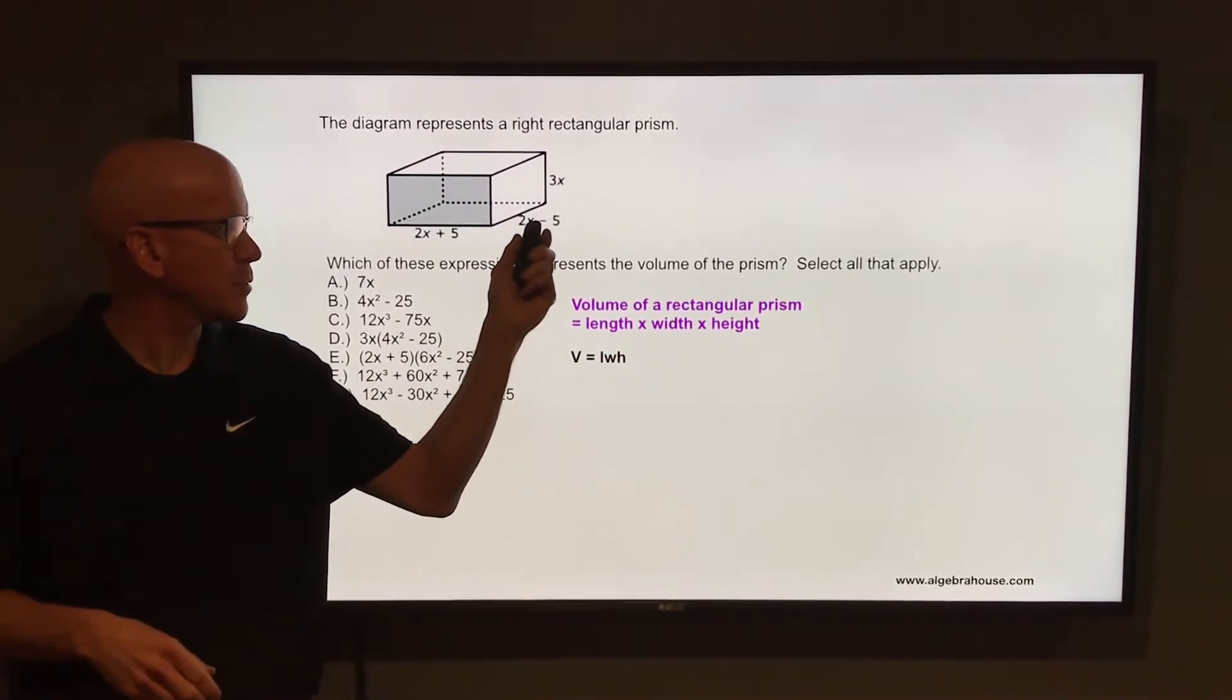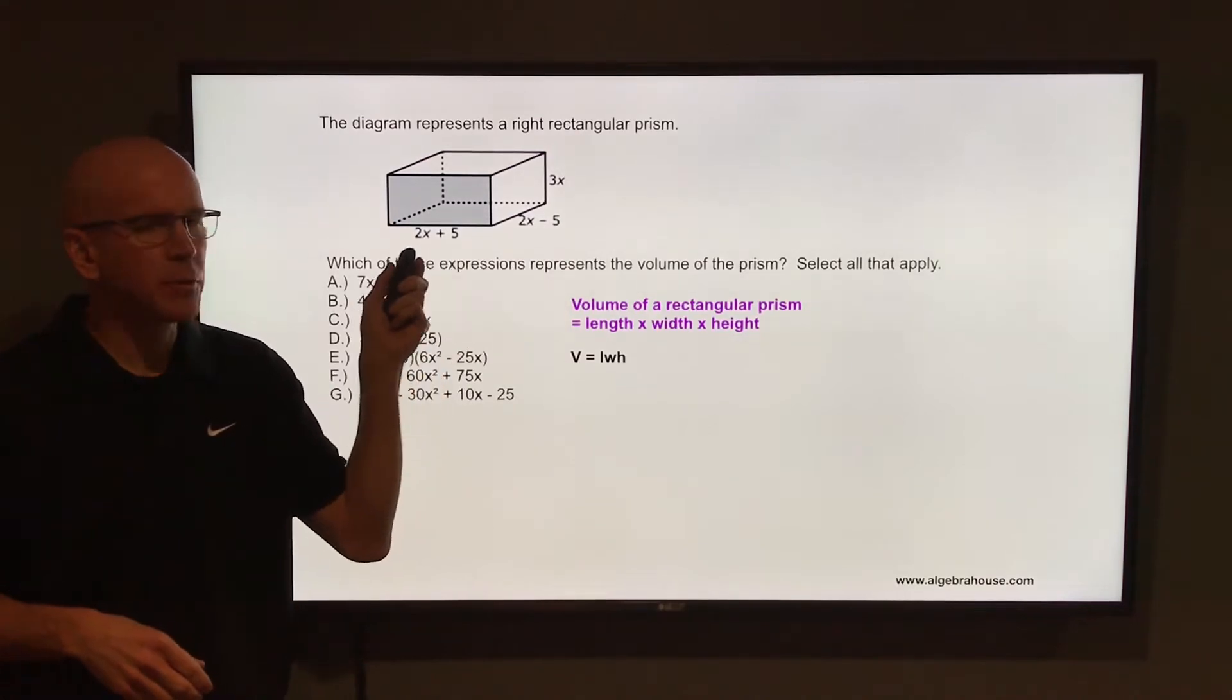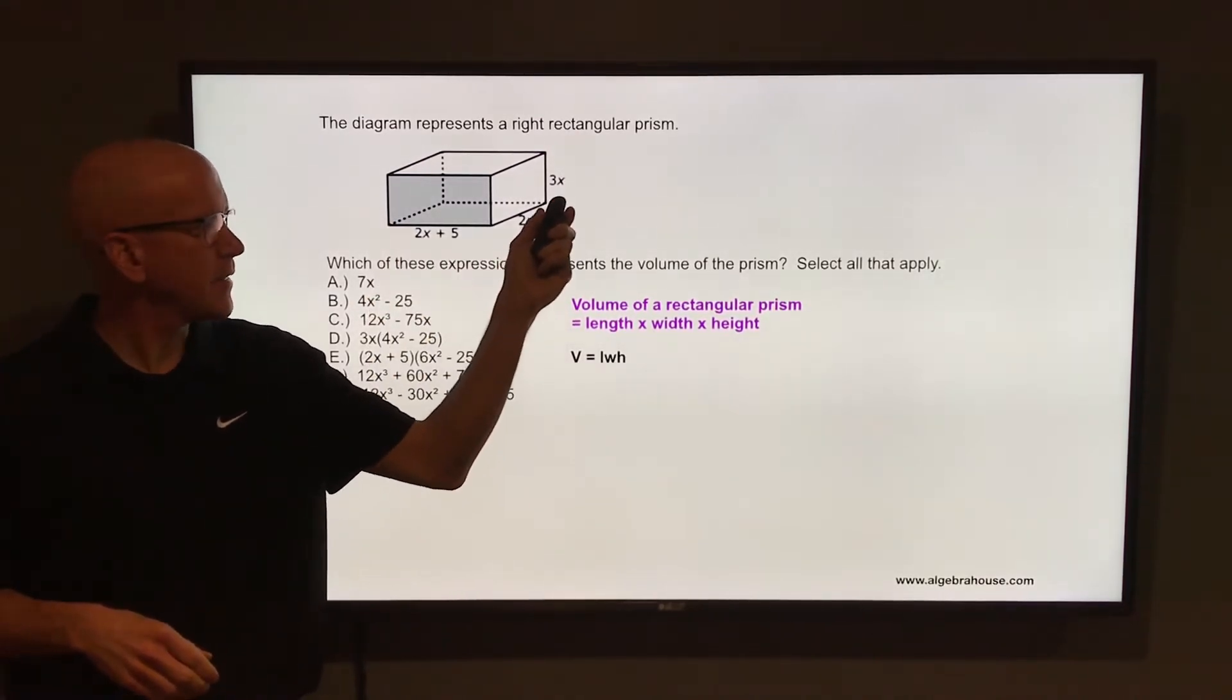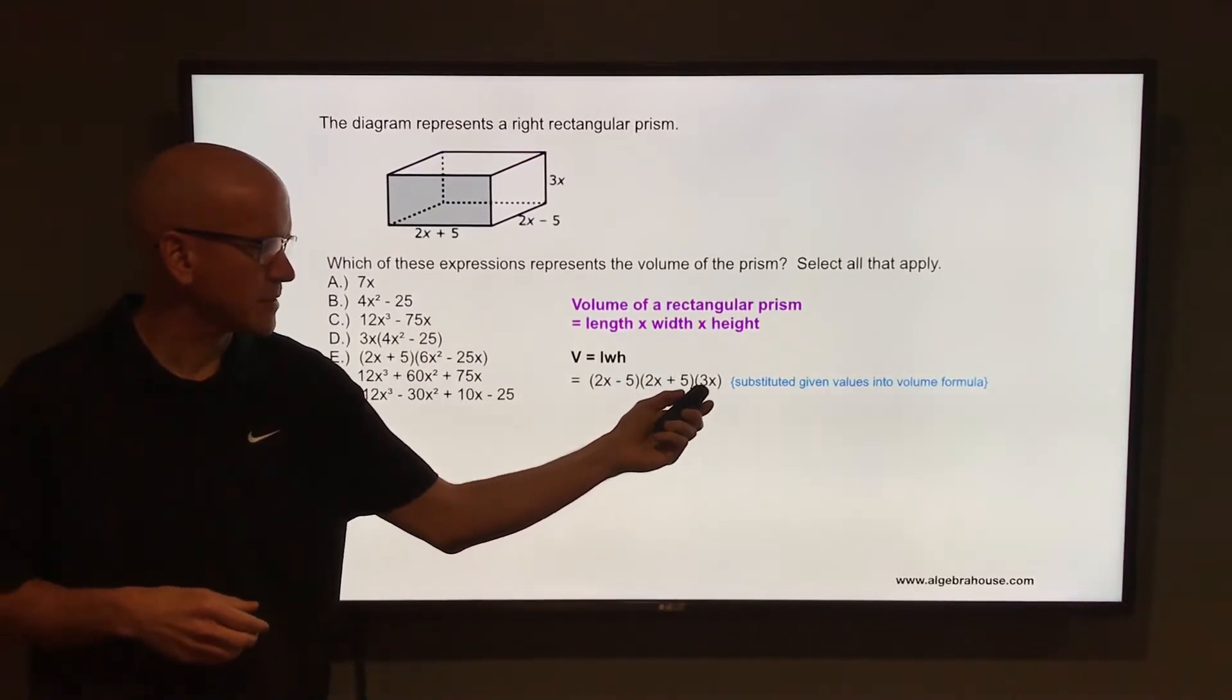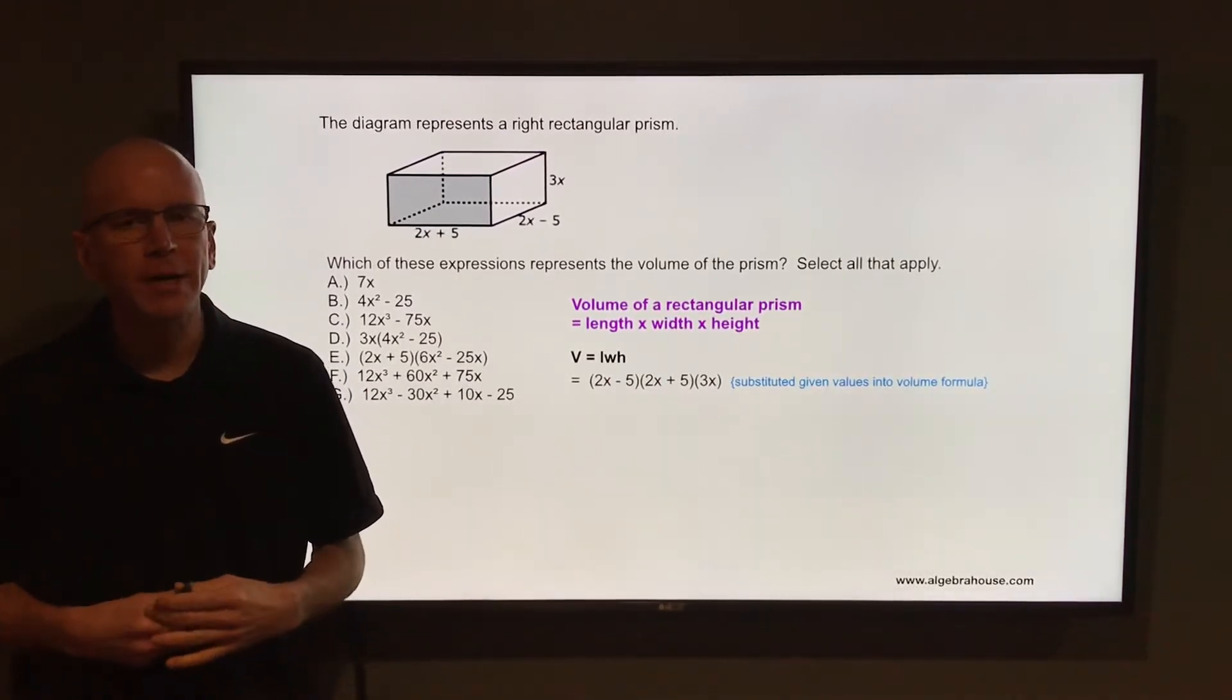So the length here is 2x minus 5, the width would be 2x plus 5, and the height is 3x. So multiply those together, take 2x minus 5 times 2x plus 5 times 3x.